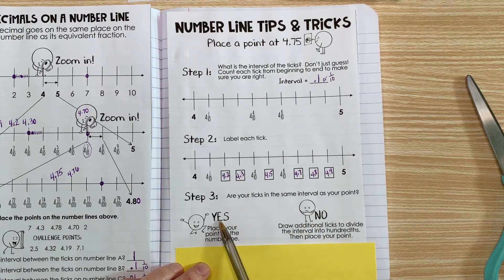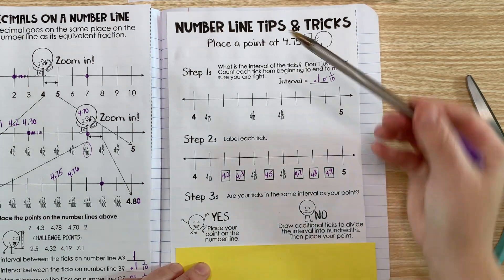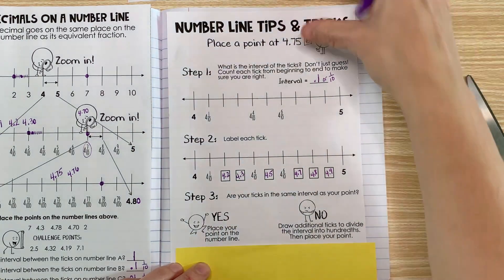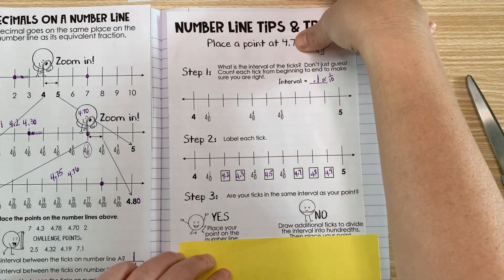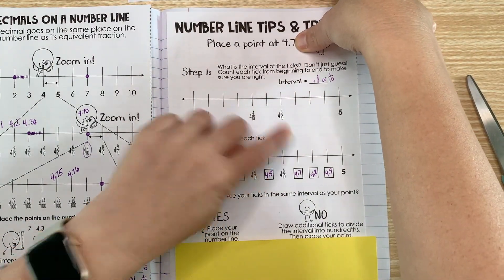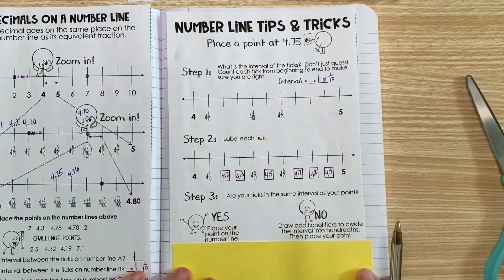If they were the same, we would just put our number on the line. If it was just 4.7 and we didn't have the 5, we would just put it right there. But it's not - it goes to the hundredths place.